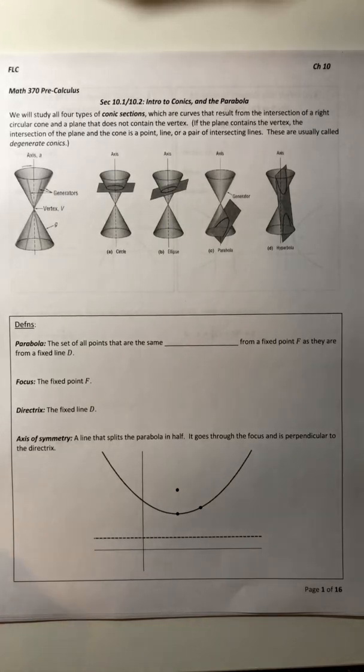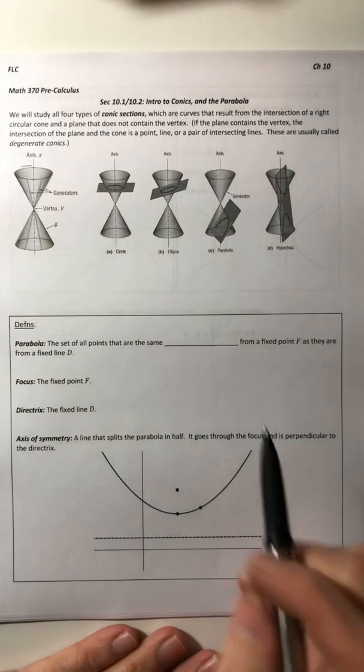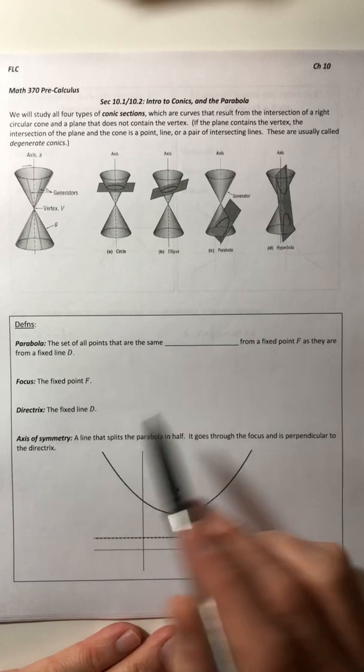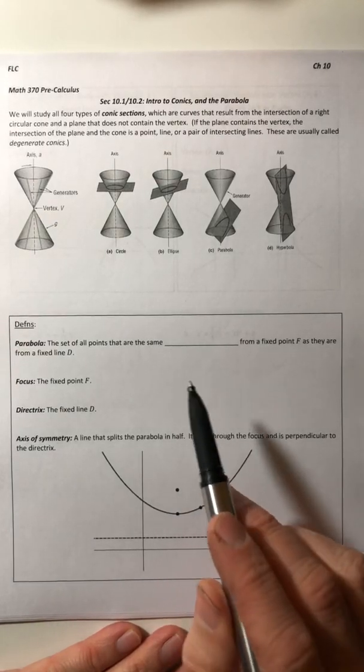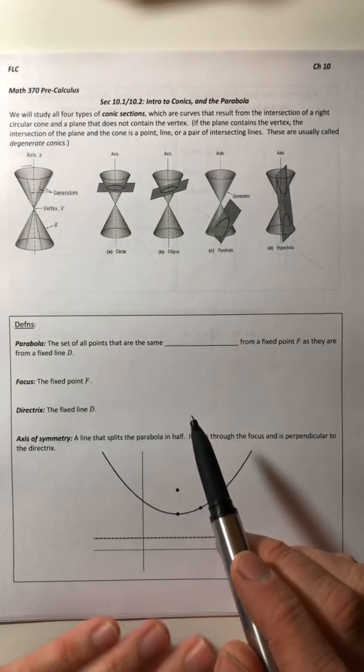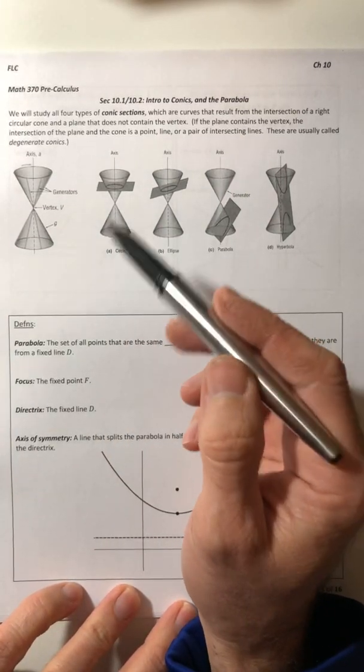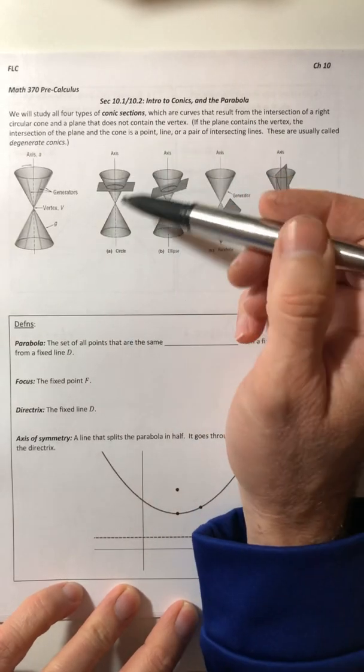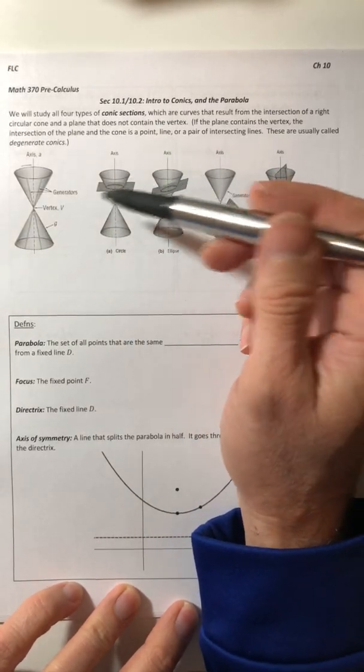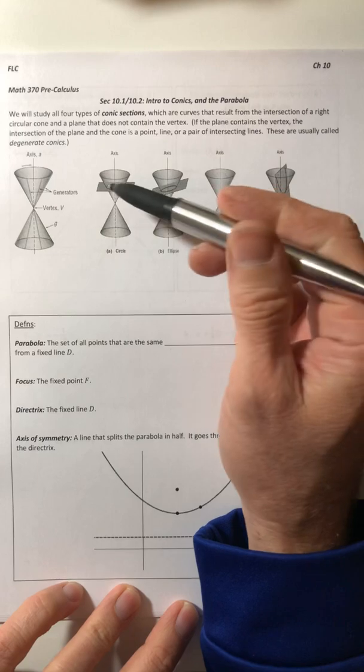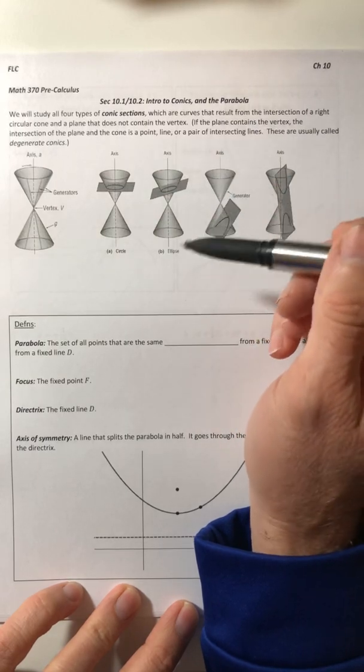So hopefully most of this stuff will be some sort of a review. Pretty much the entire section is going to be on conic sections. Conic sections are graphs that are generated from cones and it just kind of depends on how you slice a cone with a plane and that'll kind of tell you the shape.